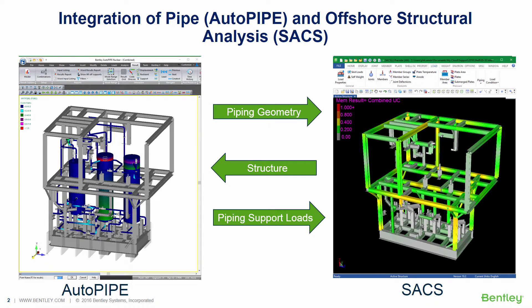The SACS analysis and design of the primary and secondary steel with the actual piping loads is now concluded. We have completed the design in hours, not weeks, using more realistic design models, with potential cost savings and dramatically improved risk mitigation.